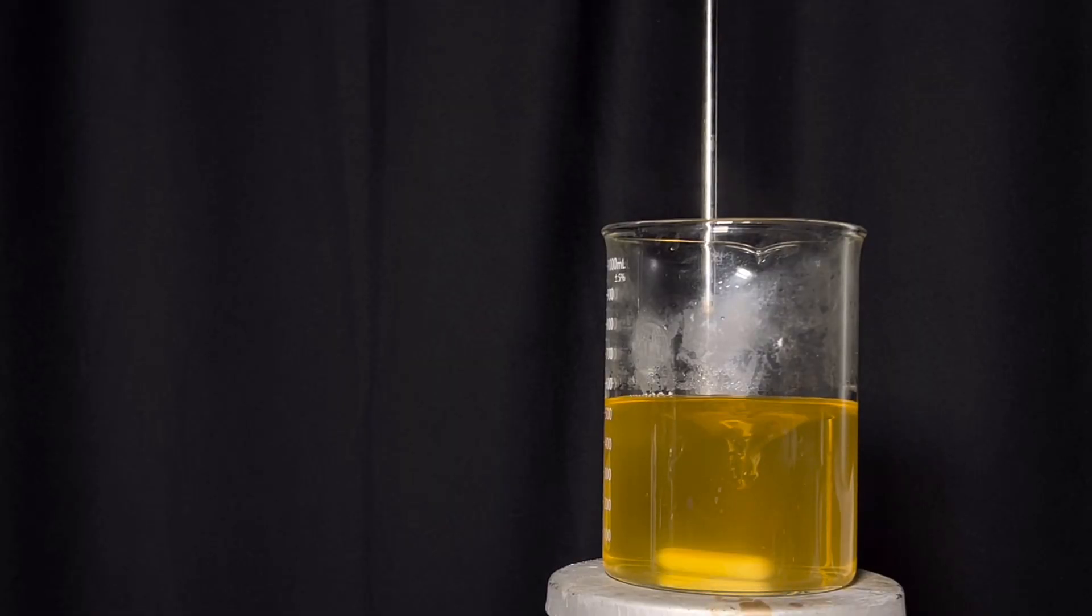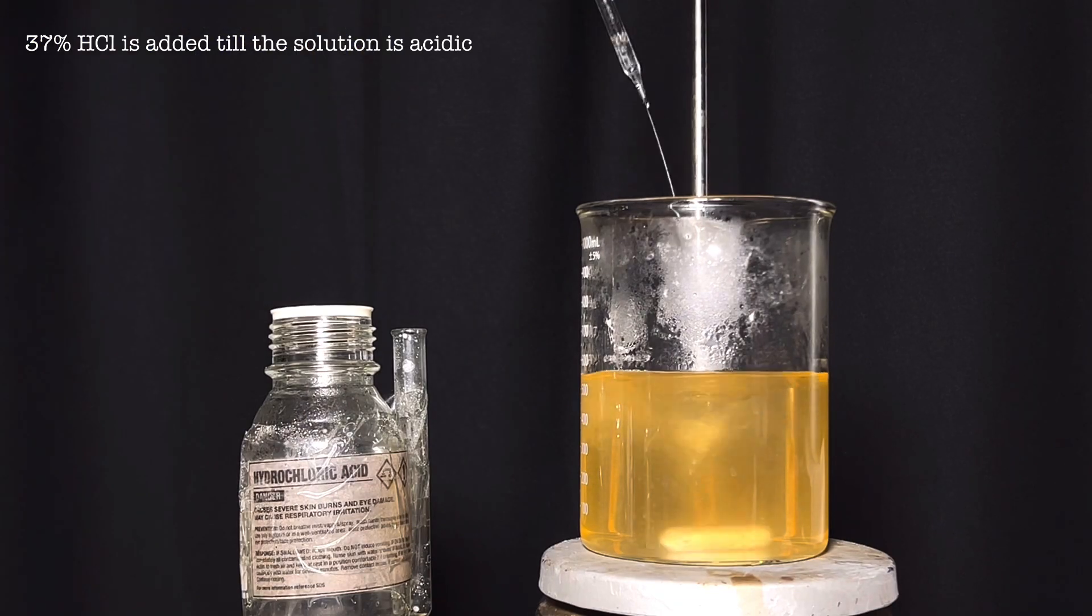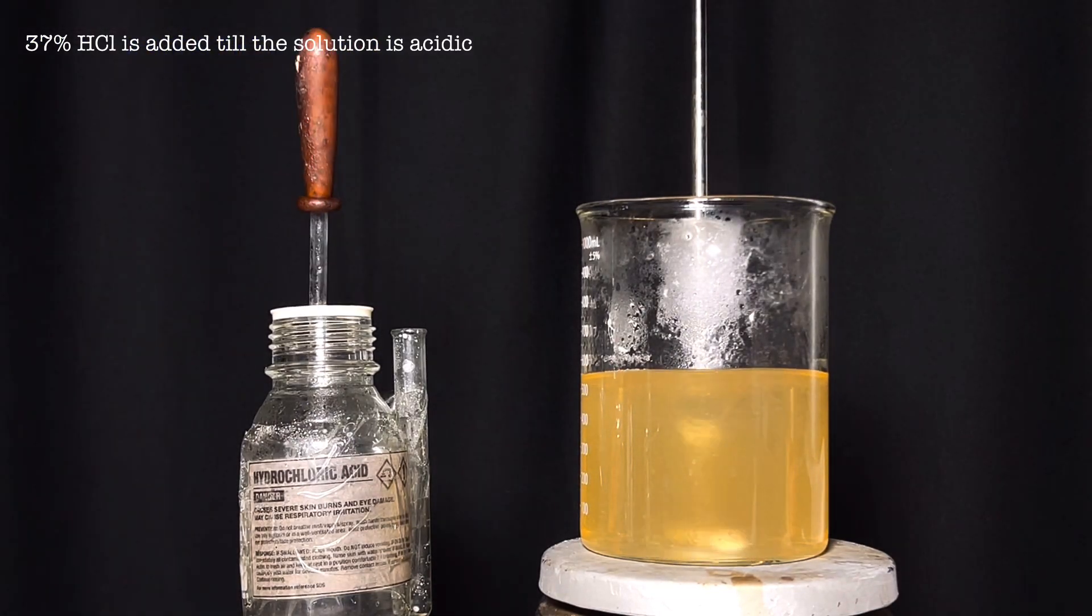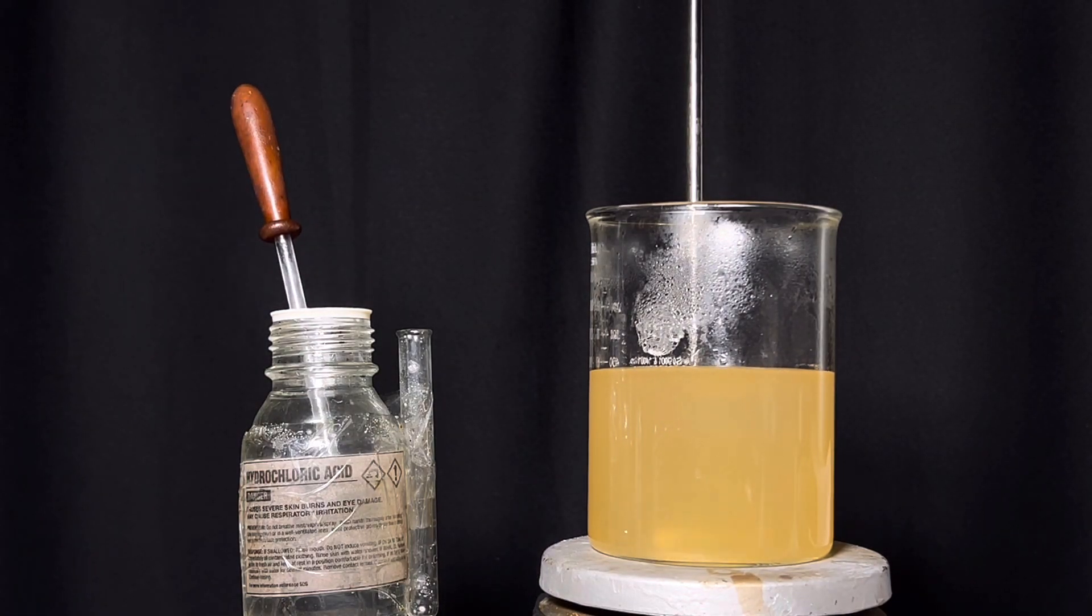The contents were poured into a larger 1000 ml beaker and stirring was turned on. Concentrated 37% hydrochloric acid was added drop-wise until the evolution of carbon dioxide stops completely. The solution also turns milky at the end.